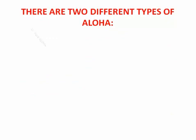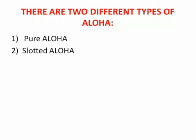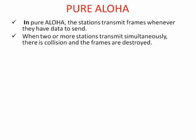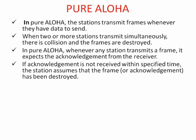There are two types of ALOHA: first is Pure ALOHA and second is Slotted ALOHA. In Pure ALOHA, stations transmit a frame whenever they have data to send. When two or more stations transmit simultaneously, there is a collision and the frames are destroyed. Whenever a station transmits a frame, it expects an acknowledgement from the receiver. If an acknowledgement is not received within a specific time, the station assumes that the frame or acknowledgement has been destroyed.